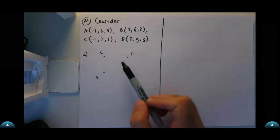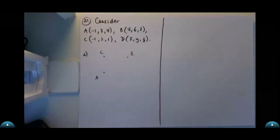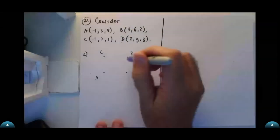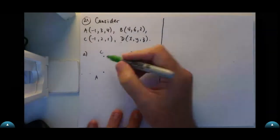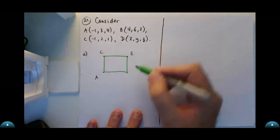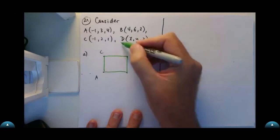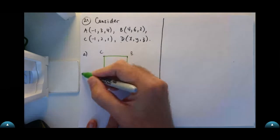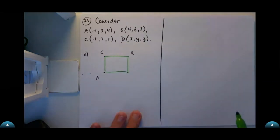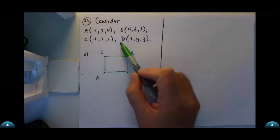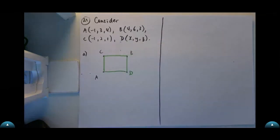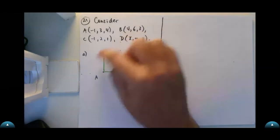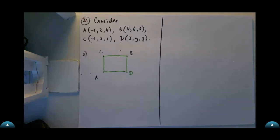The fourth point D can lie in three different positions — here, here, or over here. There are three different kinds of parallelograms you can get. If D is at one position, that's one parallelogram; if D is up here, it would look like that; and if D is over there, it would be like that. Just knowing that there are three parallelograms possible is very powerful.